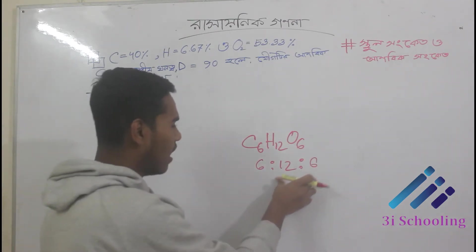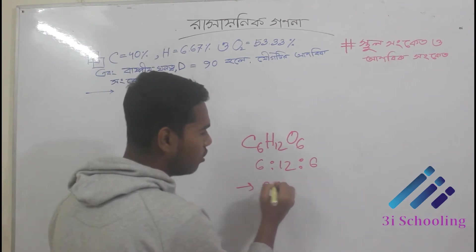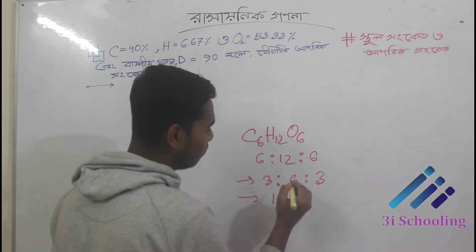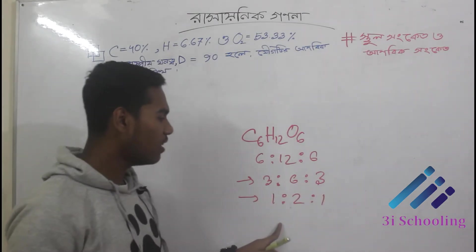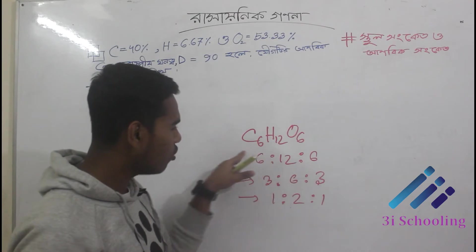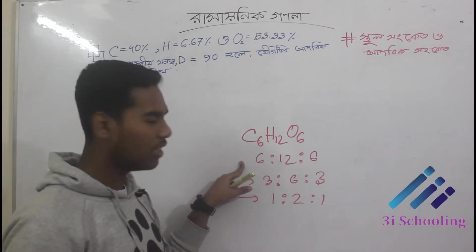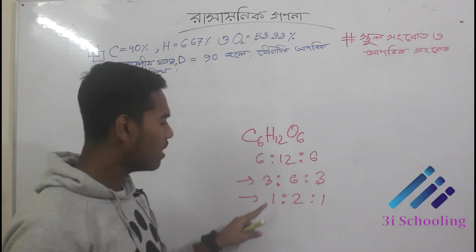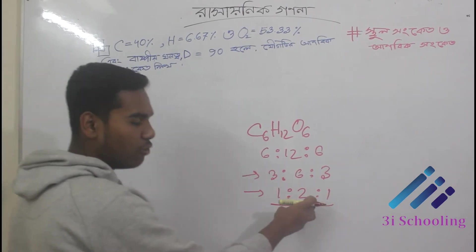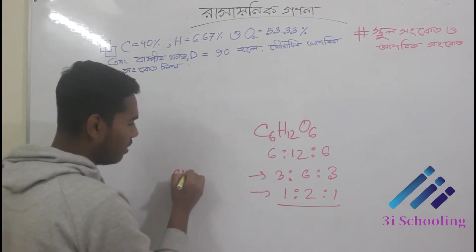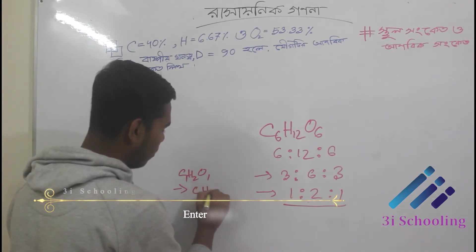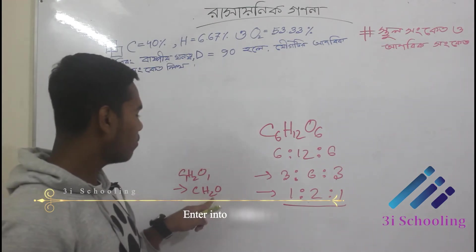The ratio is 6 to 6, meaning 1 is to 2 is to 1. So this is why we call this formula — the empirical formula. The ratio C to H to O is 1 to 2 to 1.